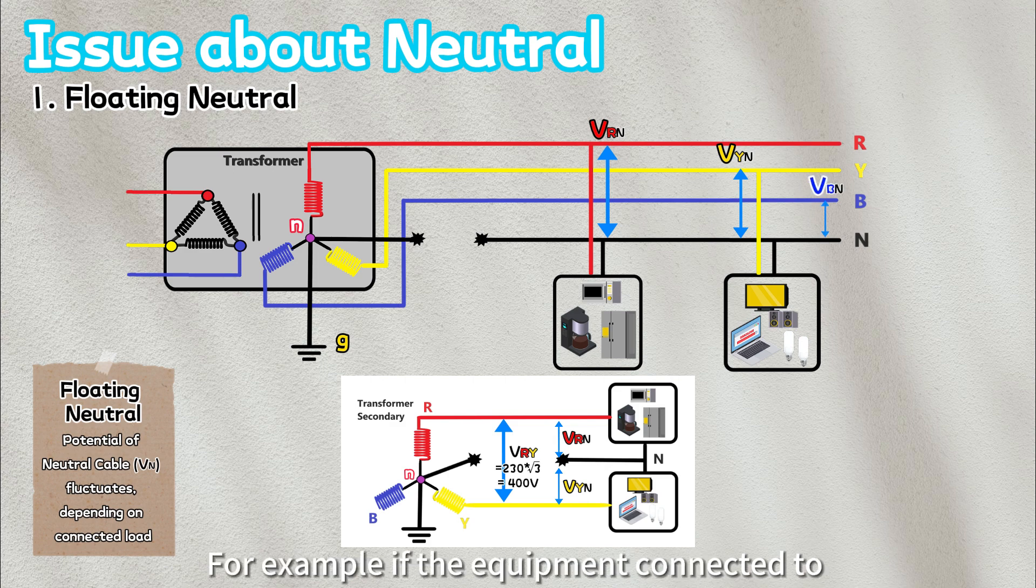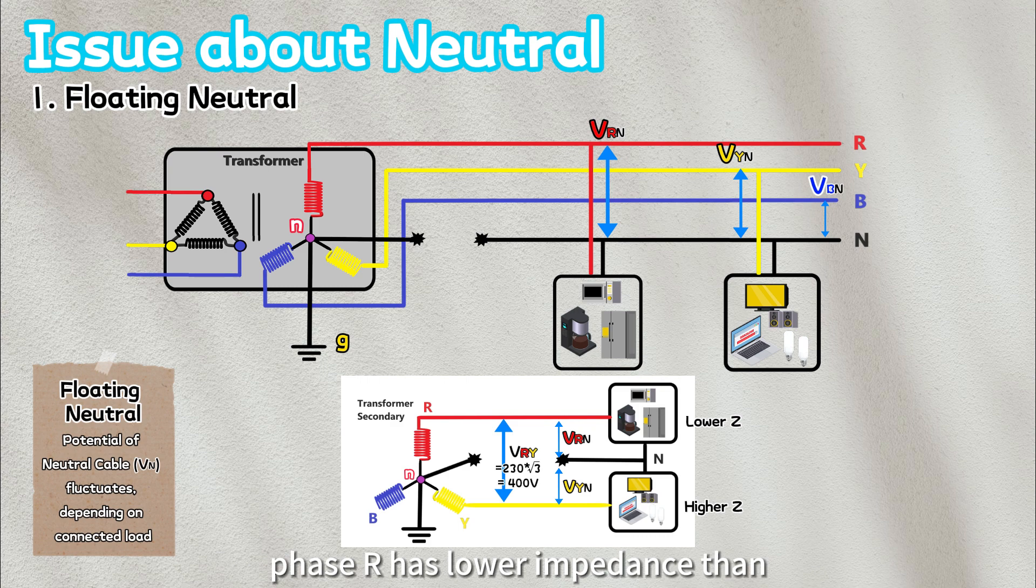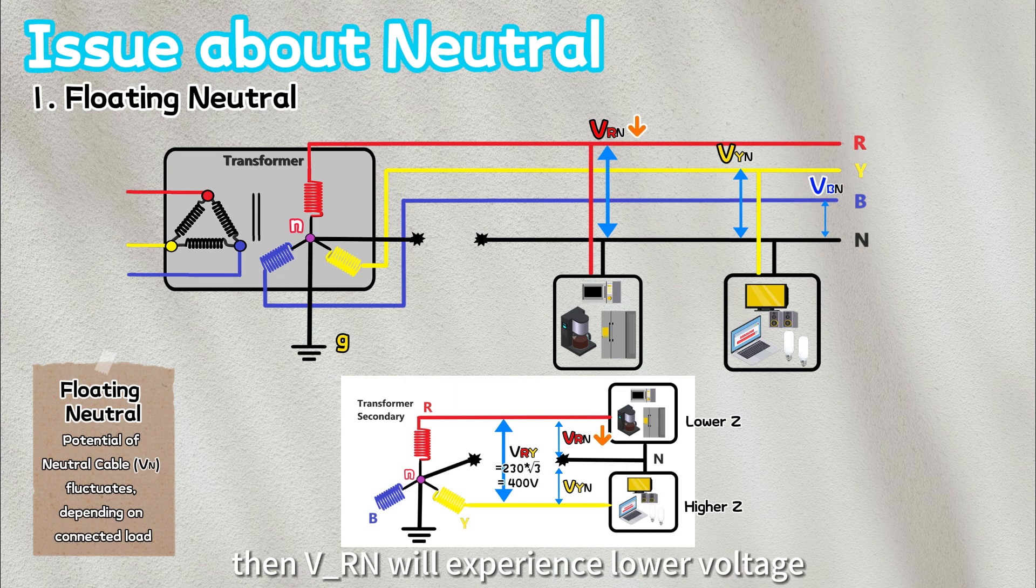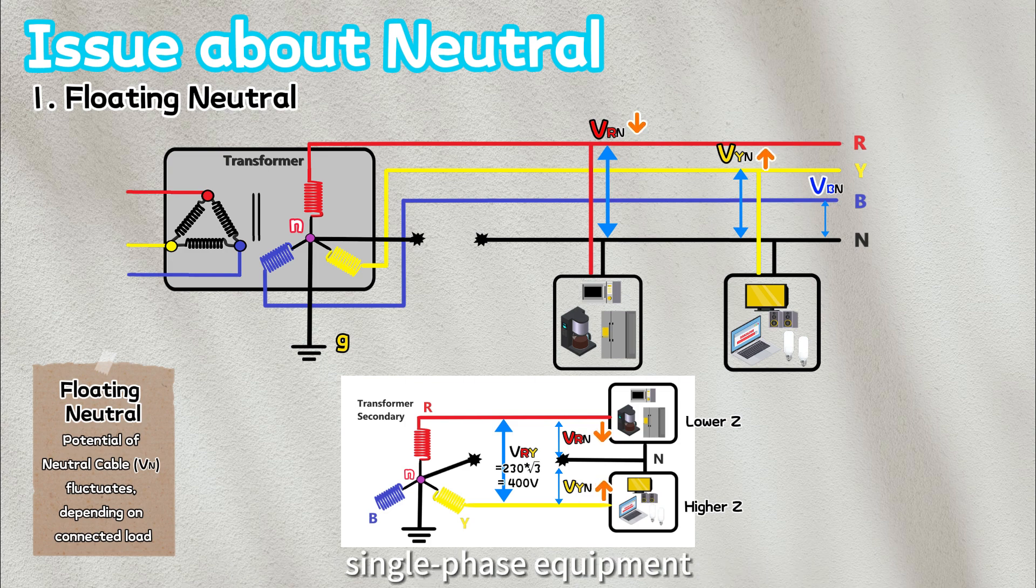For example, if the equipment connected to phase R has lower impedance than equipment connected to phase Y, then VRN will experience lower voltage, while phase VYN will rise to a higher voltage. This poses a significant issue for connected single-phase equipment.